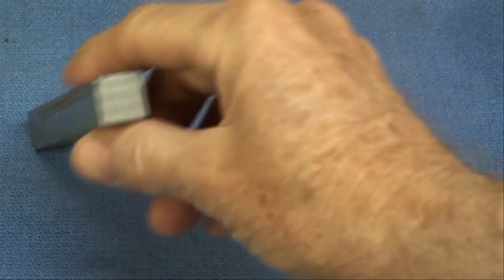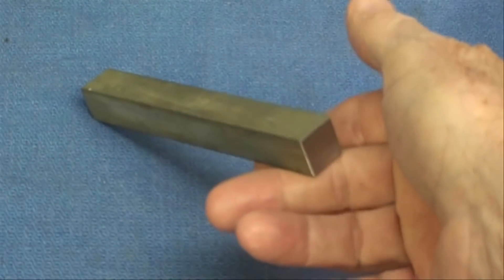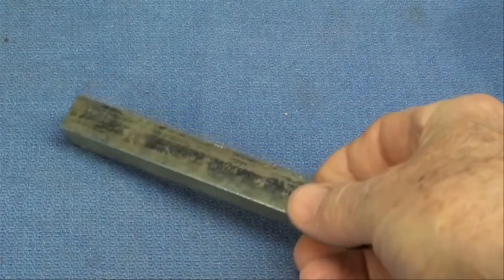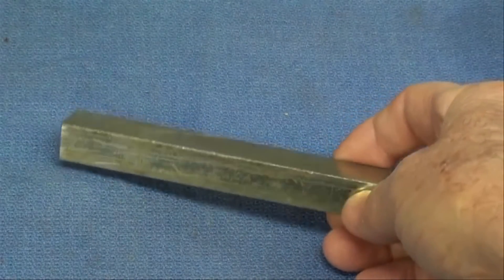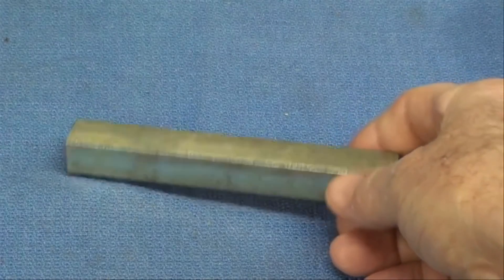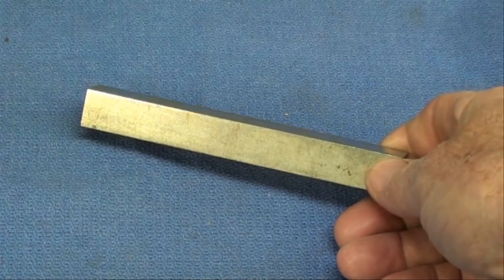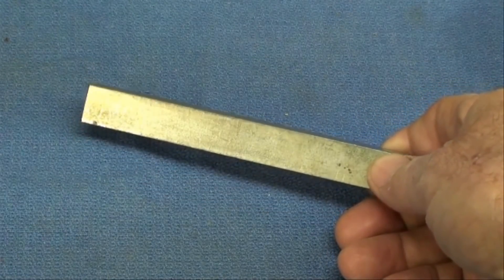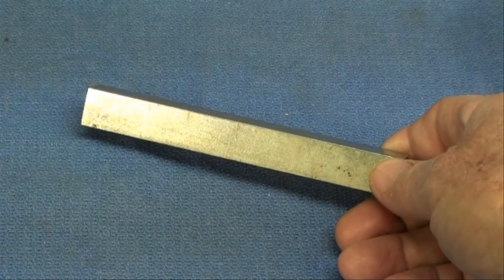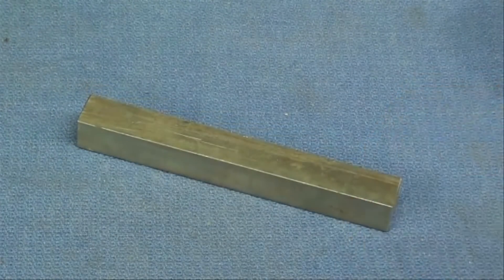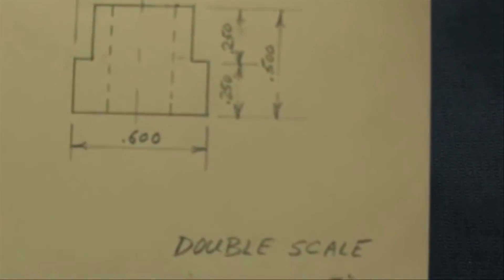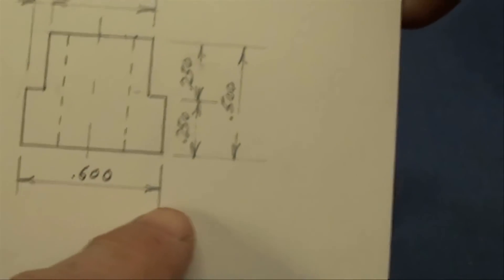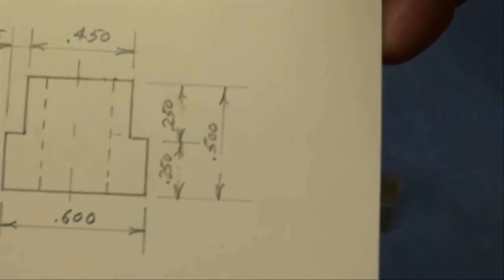This is square stock, 5/8 square and about five inches long. Actually this is a piece of key stock like you'd buy at any hardware store, sometimes called make-a-key, but any type of cold rolled material is fine. The first thing I'll do is put it on the Bridgeport mill and mill it to the dimensions shown here. I want it to be six hundred thousandths in one direction and five hundred thousandths in the other.